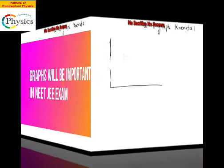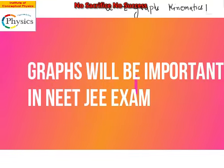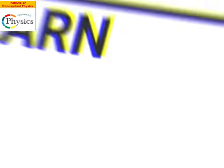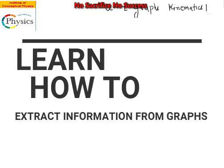So if you have an acceleration time graph which looks like this, let me just draw it for you. So there is a body, and the acceleration is shown here. And this acceleration is two meters per second square, and it is maintained for a period of two seconds.